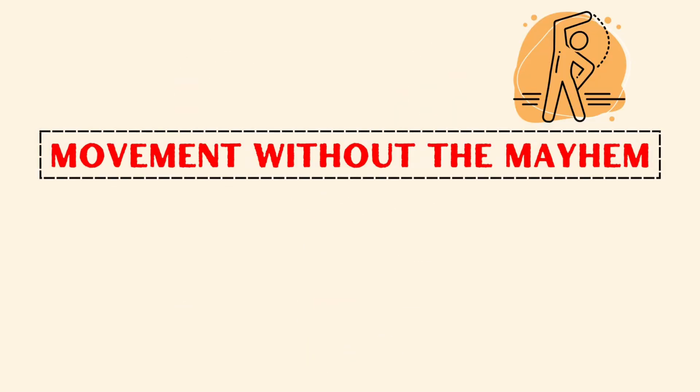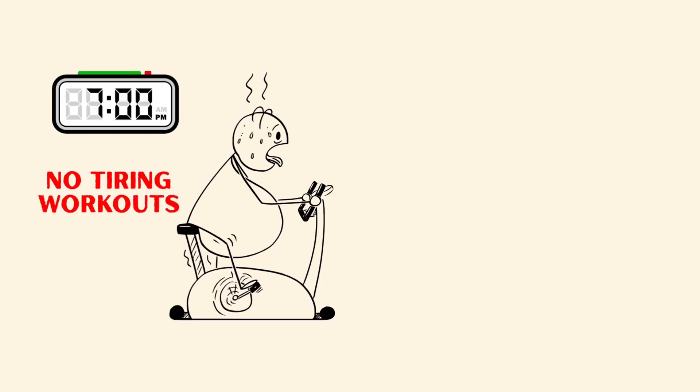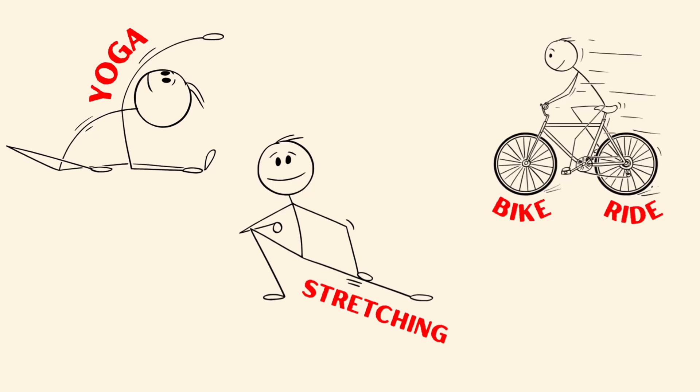Movement without the mayhem. Light exercise for a sharp mind. At 7 p.m., instead of punishing workouts, Ethan does light yoga, stretching, or a slow bike ride.